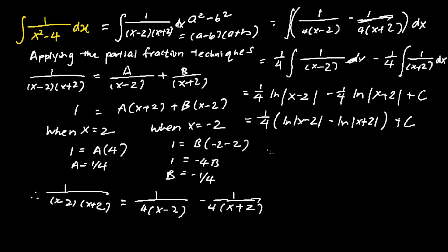Last but not least, to simplify the expression further, I can combine these two into a fraction. Hence the final answer is 1 quarter ln absolute value of (x minus 2) over (x plus 2) plus C.